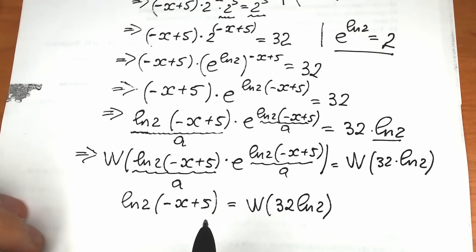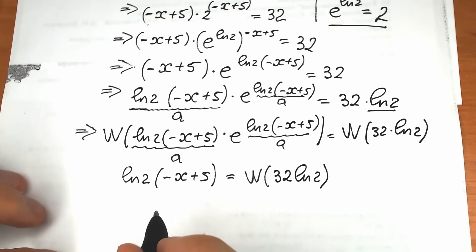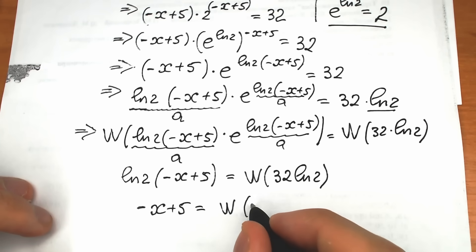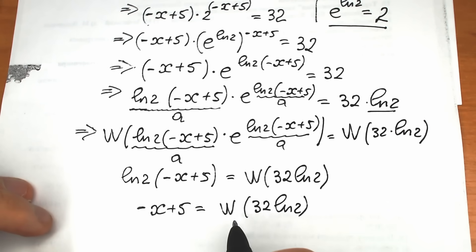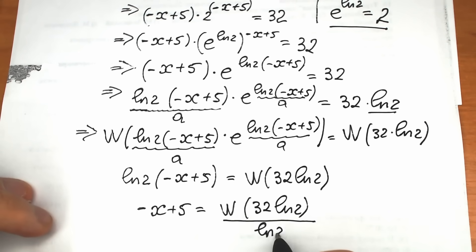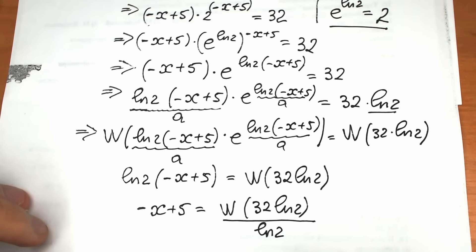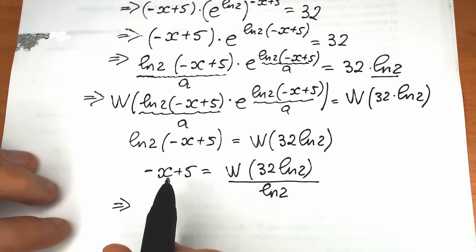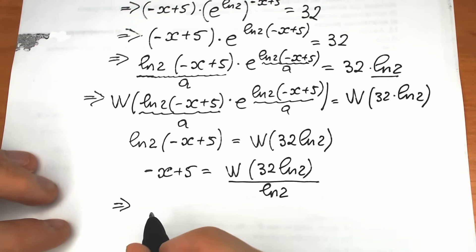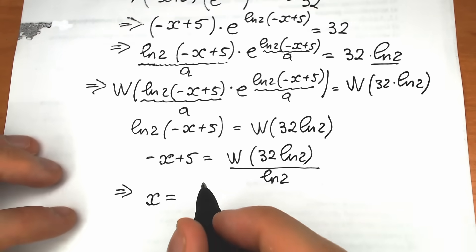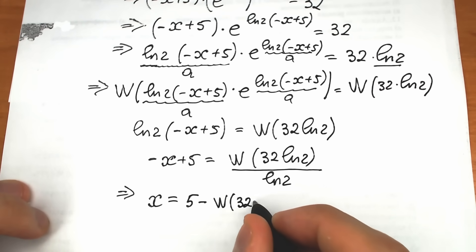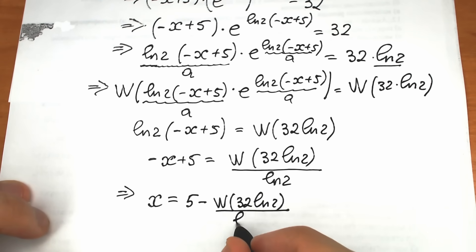Now let's divide both sides by natural log 2. We get minus x plus 5 equal to W(32·ln2) over ln2. Then solving for x: x equals 5 minus W(32·ln2) divided by natural log 2. This is our final answer.